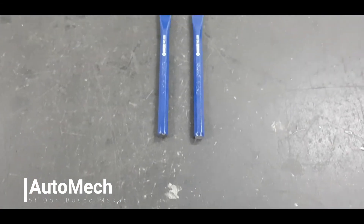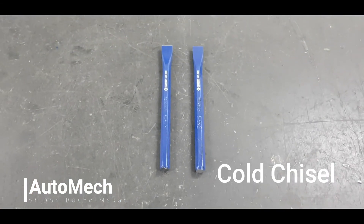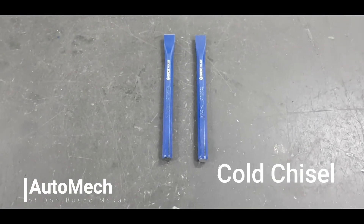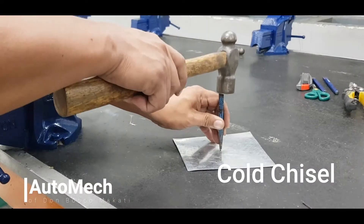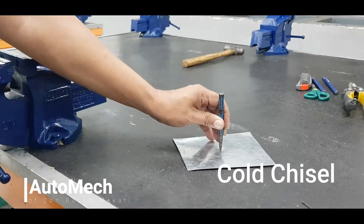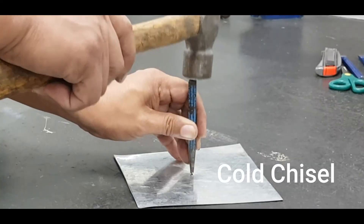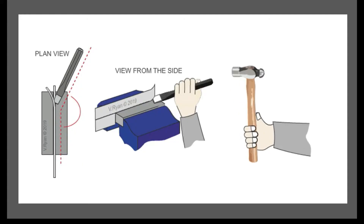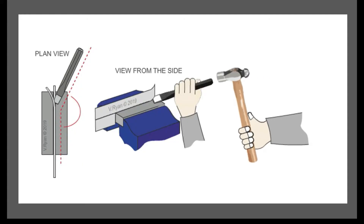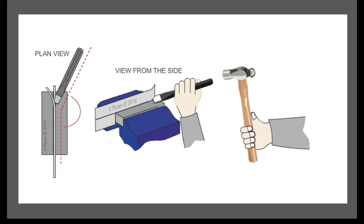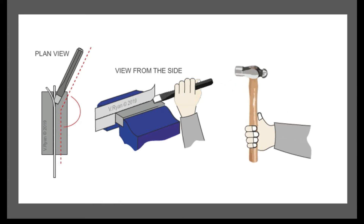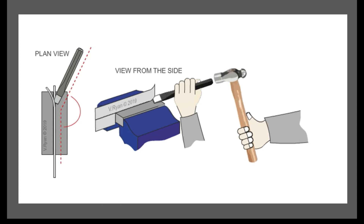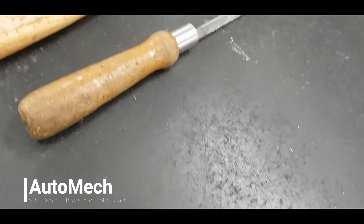Next, the cold chisel. It is a tool made from a hexagon or octagon shaped steel. One end is shaped for cutting or marking operations, while the other end is left blunt to receive the blows of a hammer.